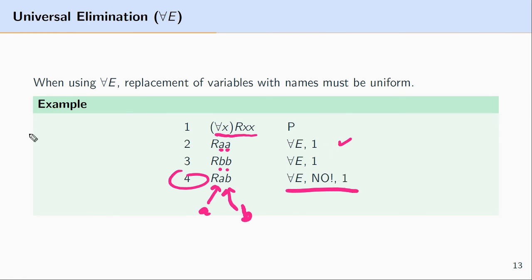To see why, suppose line 1 says "everyone loves themselves" — so for any X in the domain, that X is in the relation of loving themselves. It would follow from line 2, when we make use of universal elimination, that Alfred loves himself. This seems to intuitively follow: if everyone loves themselves, then Alfred loves himself. At line 3, we have RBB — let's say B stands for Bob — so line 3 says Bob loves himself. Again, this doesn't seem problematic: if everyone loves themselves, then it follows that Bob loves himself.